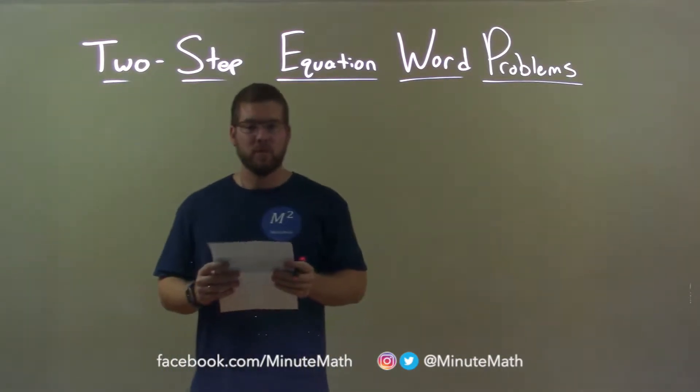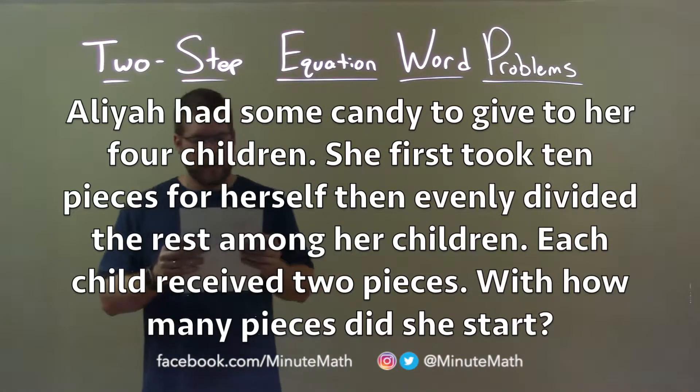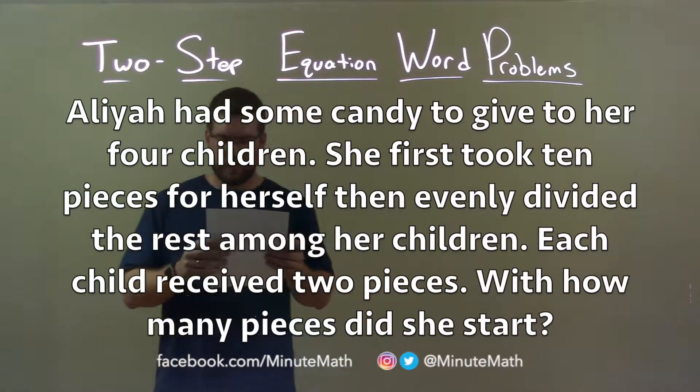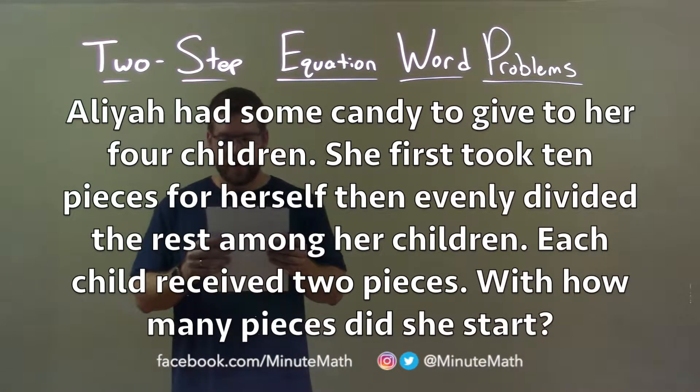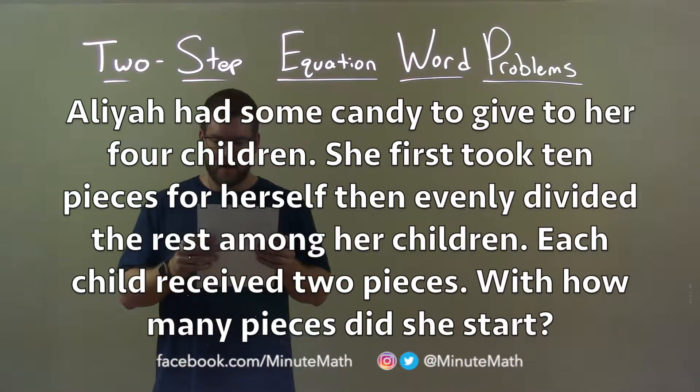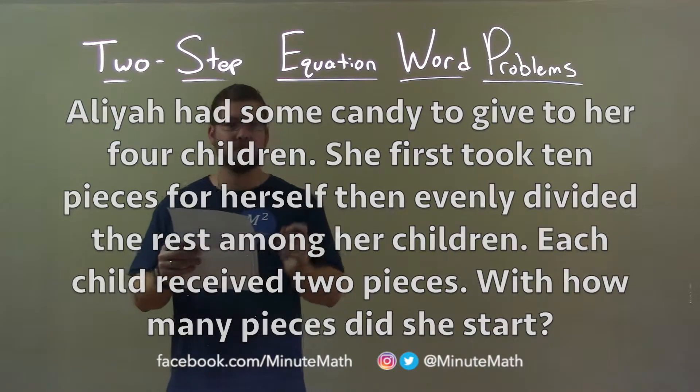If I was given this word problem: Aaliyah had some candy to give her four children. She first took 10 pieces for herself and then evenly divided the rest among her children. Each child received two pieces. With how many pieces did she start?